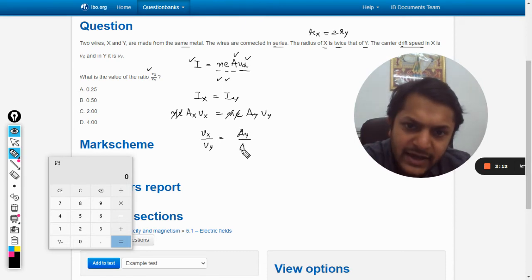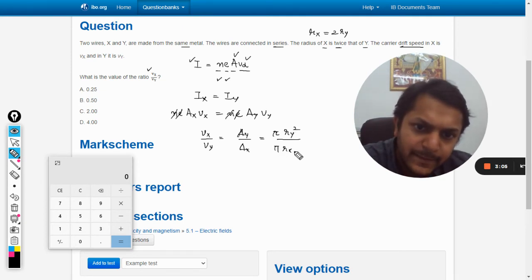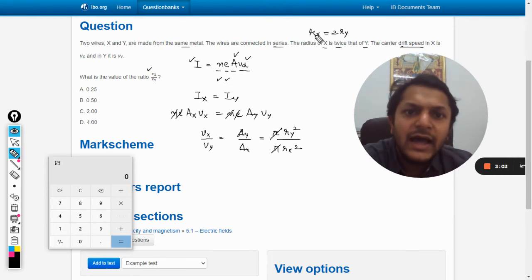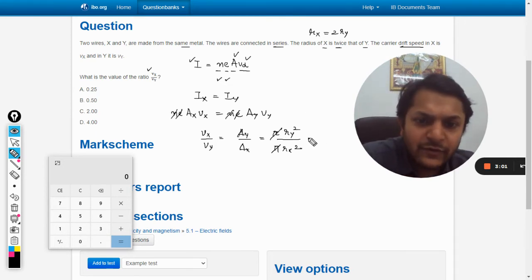We can say that area will be pi r squared, pi r squared. And rx is equal to twice of ry.